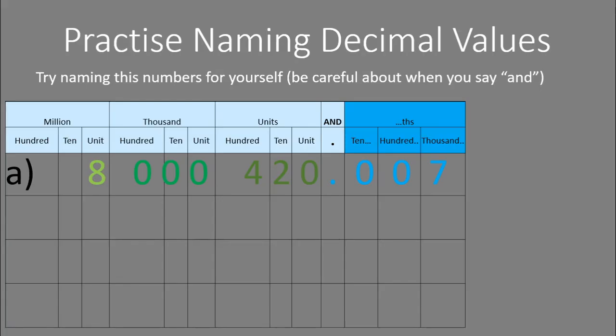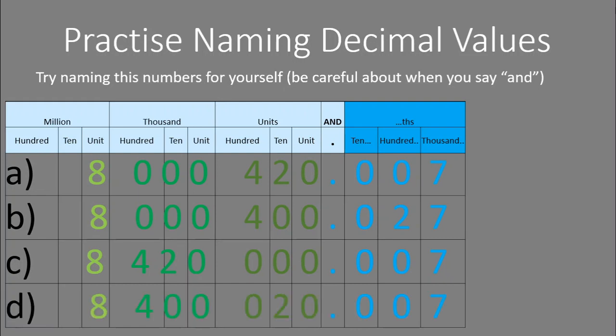Let's try some practice for yourself. Go ahead and copy these numbers down and then write the number in words. Be very careful when you say 'and' — we only say 'and' when we get to the decimal point. It may seem like a silly rule, but the digits and place values in these questions are very similar. If you don't put your 'and' in the right place, you might be writing the name of a completely different number. Go ahead and hit pause now and give that a go.